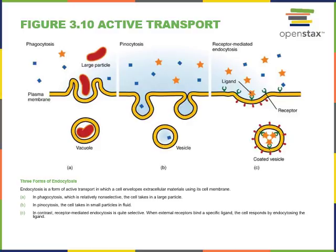There are three different forms of endocytosis. Phagocytosis, literally translated as 'cell eating,' occurs when the plasma membrane wraps around a large particle such as a bacterial cell and brings it into the cell to form what is called a vacuole.